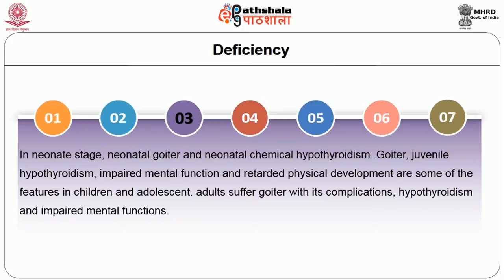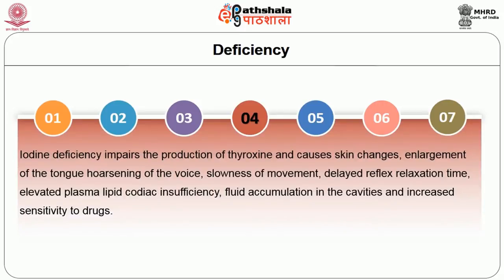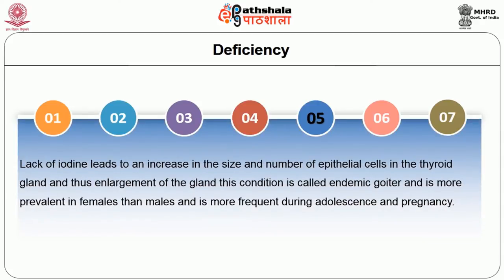Goiter, juvenile hypothyroidism, impaired mental function and retarded physical development are some of the features seen in children and adolescents. Adults suffer from goiter with its complications, hypothyroidism and impaired mental functions. Iodine deficiency impairs the production of thyroxine and causes skin changes, enlargement of the tongue, hoarsening of the voice, slowness of movement, delayed reflex relaxation time, elevated plasma lipids, cardiac insufficiency, fluid accumulation in the cavities and increased sensitivity to drugs. Lack of iodine leads to an increase in the size and number of epithelial cells in the thyroid gland, causing its enlargement.